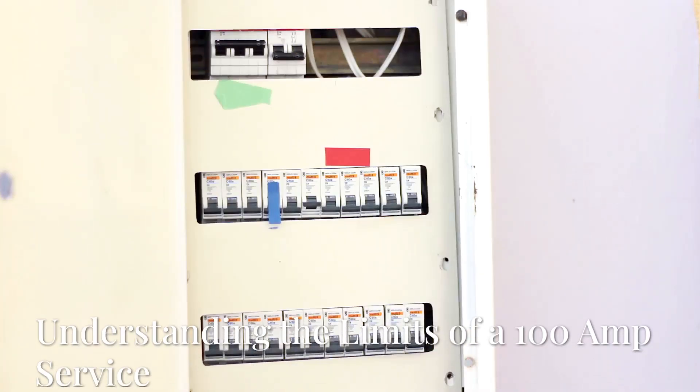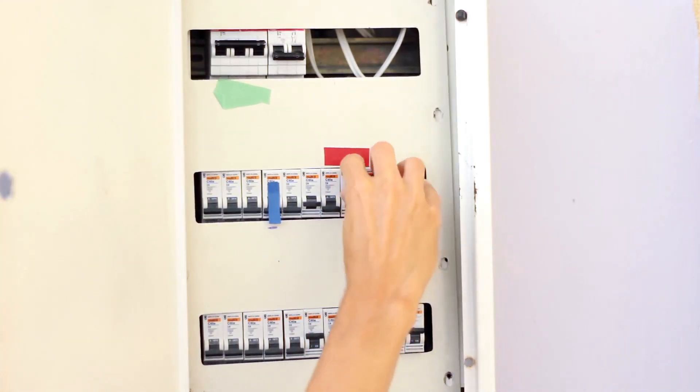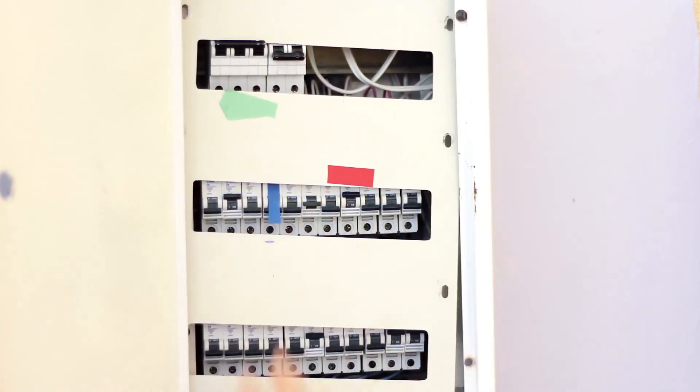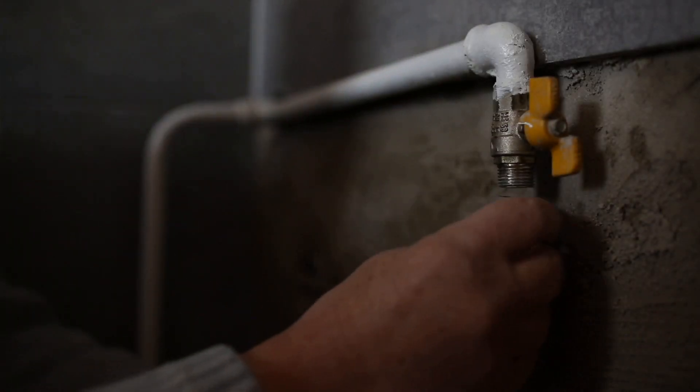A 100 amp service means your electrical panel can safely handle up to 100 amps of current flowing through it at any given time. Think of it like a water pipe. The larger the pipe, the more water can flow through it. Your electrical system works the same way.